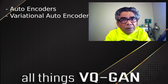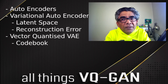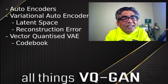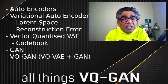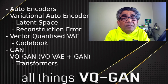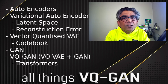variational autoencoder, latent space and the reconstruction error related to autoencoders, vector quantized variational autoencoder with the focus on codebook, its generation, the latent vectors in the codebook and how the codebook stores the features from the source or the input data. Finally, we are going to cover the vector quantized variational autoencoder and generative adversarial neural networks, or GAN. At last, we are going to look at the transformers and how the transformers take advantage of the codebook to extract features so that new images can be generated through the VQGAN.